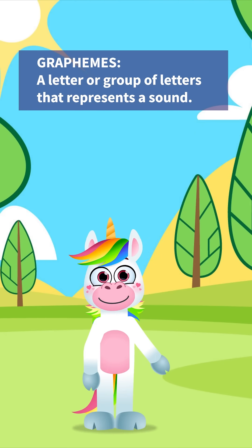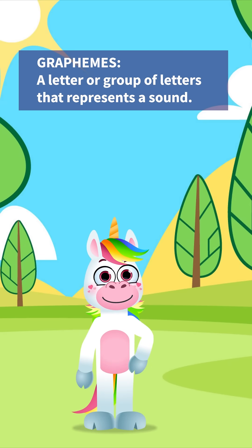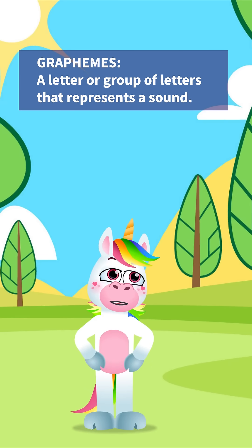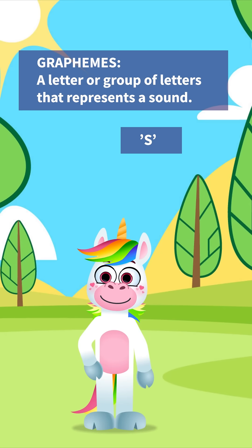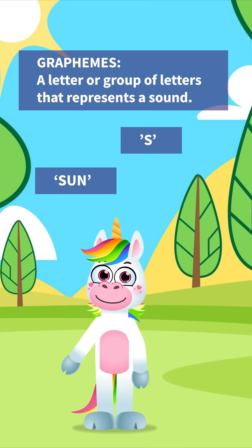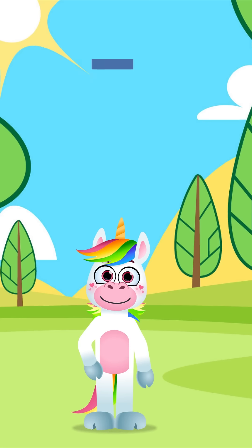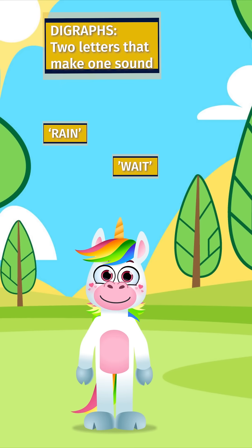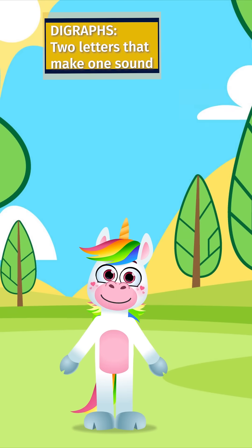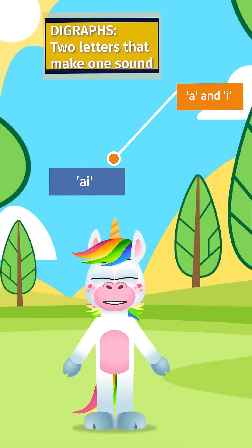So what exactly is a grapheme? Well, a grapheme is a written letter or group of letters that represent a sound in a word. We have single letter graphemes that represent sounds in words like sun or snake. And then we have digraphs like AI in words like rain or weight, where the letters A and I team up to create one powerful sound: 'A'.